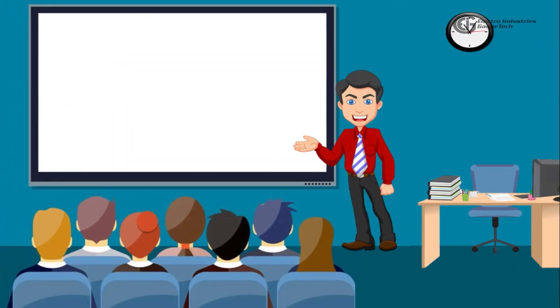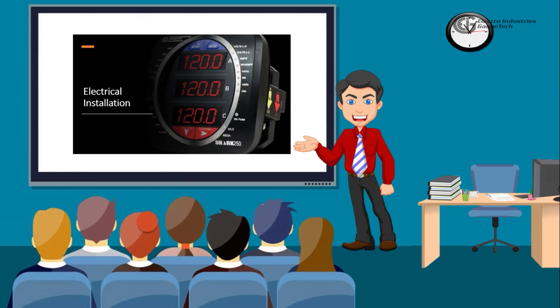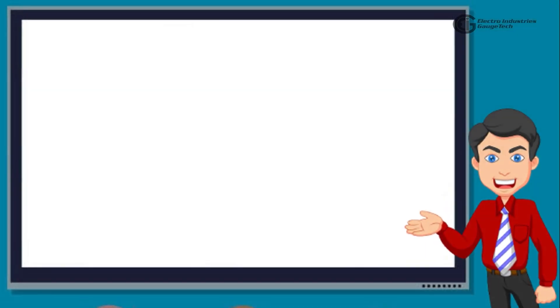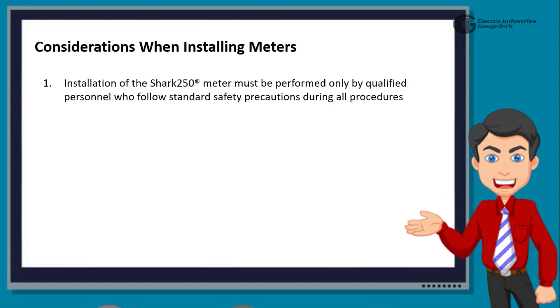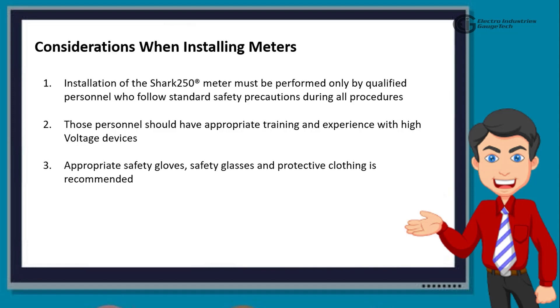Now, the next section to look at is the electrical installation. When installing meters, there are a few considerations which we need to see. Installation of the Shark 250 meter must be performed only by qualified personnel who follow standard safety precautions during all procedures. Those personnel should have appropriate training and experience with high voltage devices. Appropriate safety gloves, safety glasses, and protective clothing is recommended.